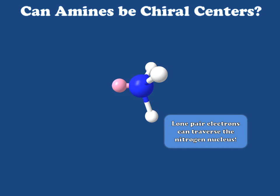What happens here is the lone pair electrons on the nitrogen center are contained in sp3 hybridized orbitals. And because they have a little bit of that s character, that lone pair of electrons can actually move through the center of this molecule to the other side of the nitrogen. So unlike the chemical bonds, it can relocate itself to the opposite side.